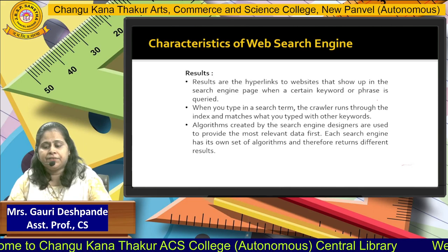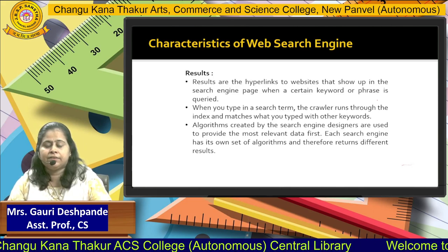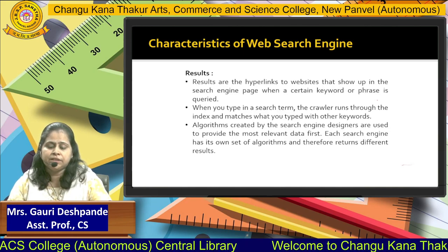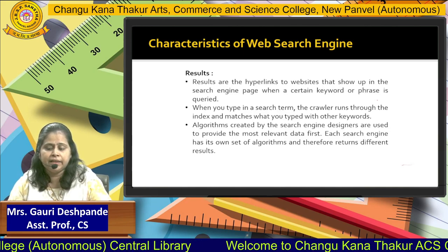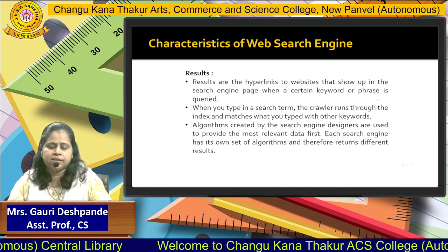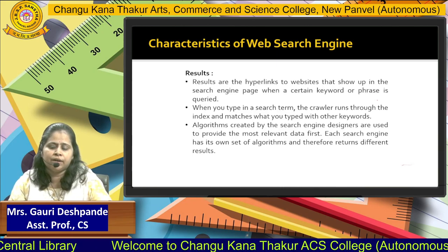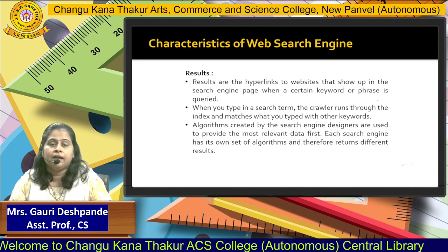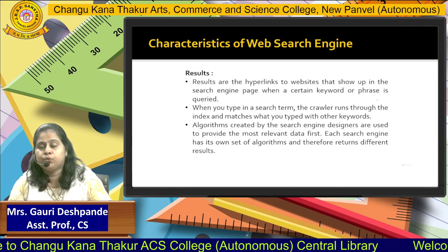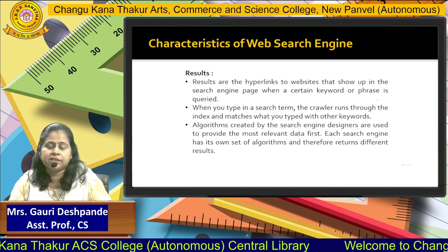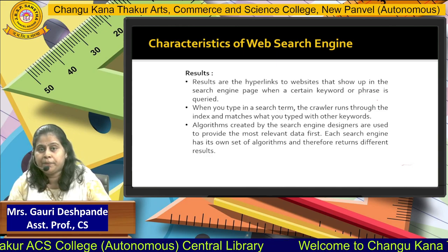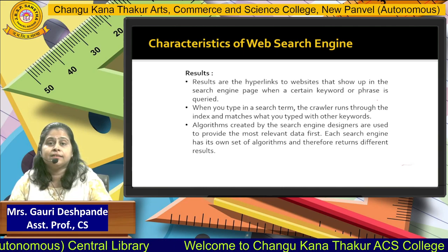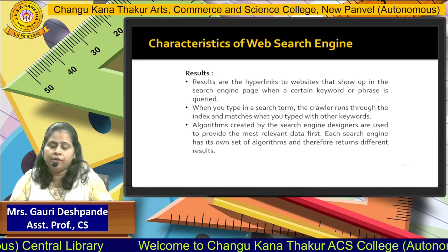The next characteristic is the result. How do we present that result with the help of your browser or your server? Result means these are some hyperlinks to websites that show up on the search engine page when a certain keyword or phrase is queried. When you type something in your search engine, that keyword or phrase goes to your databases and then a matching operation is done. After matching, we get the result on your browser.